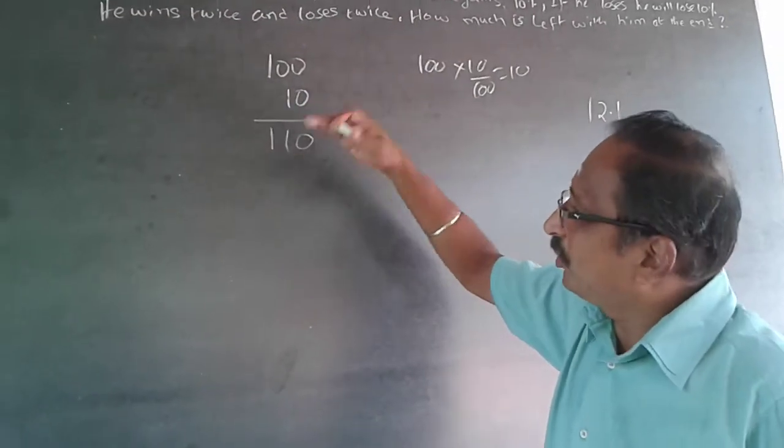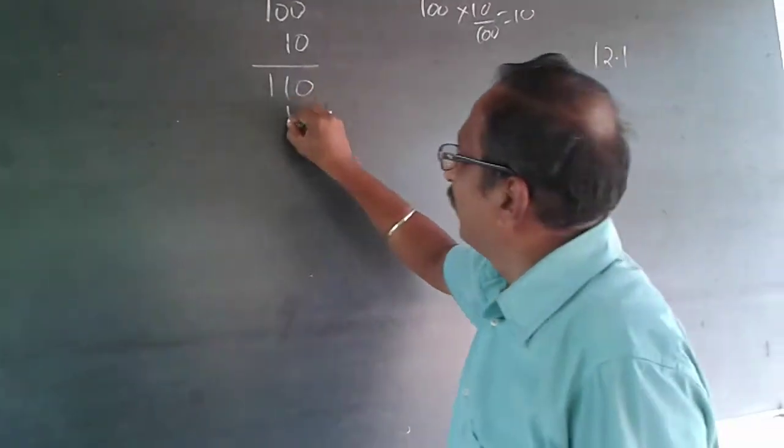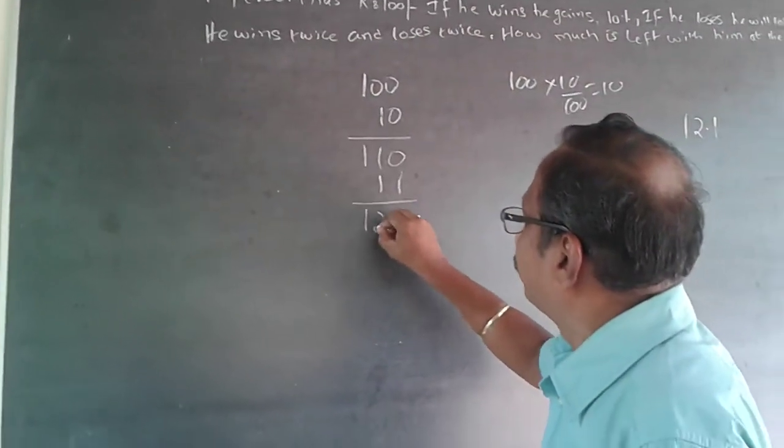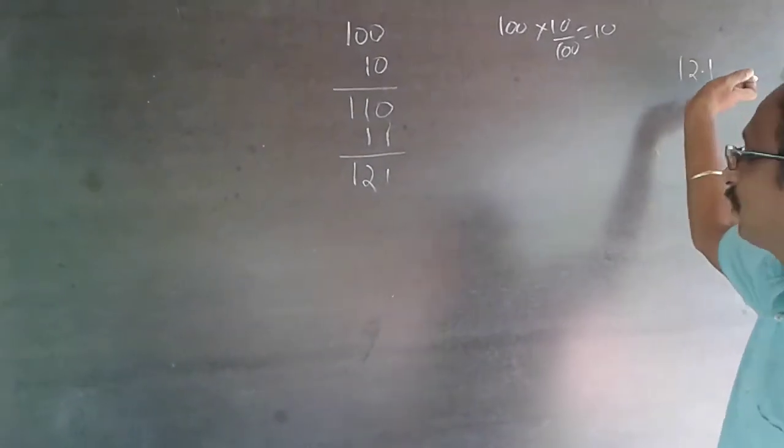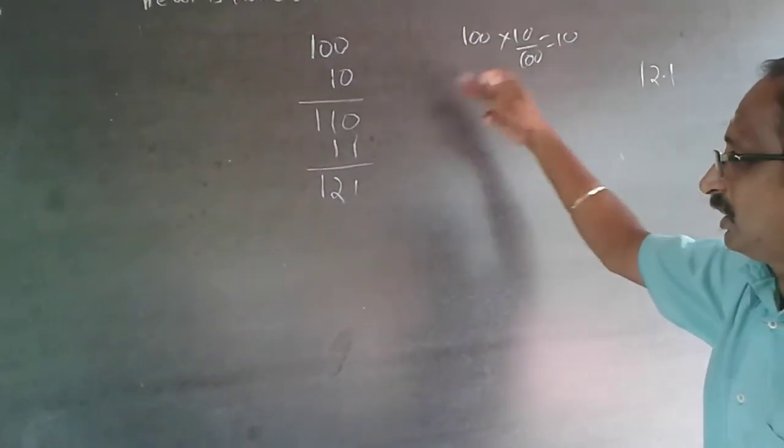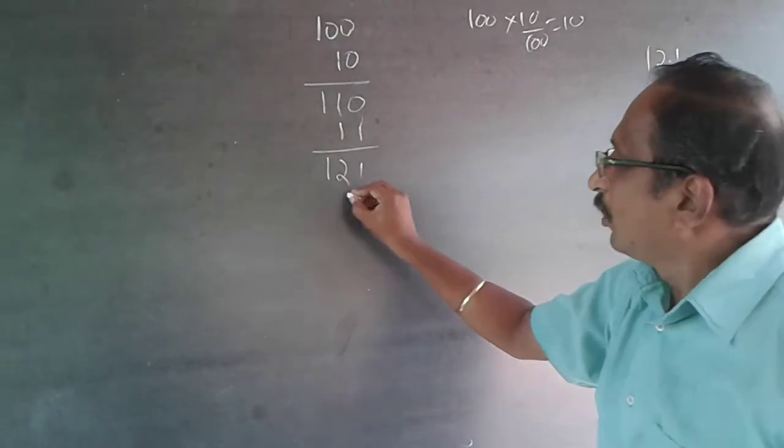Now this amount has become 110. He is going to win 10 percent again, so 11, he'll still be at 121. Now he is going to lose 10 percent. As I told you, 12.1 will be 10 percent of this because he has won twice and will lose twice.